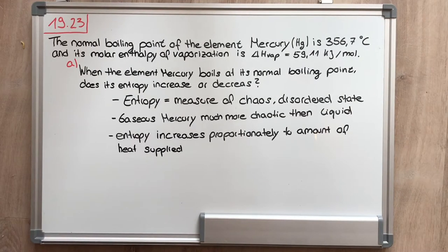For the first question, we have to figure out what is entropy. Entropy is a measure of the chaos, a disordered state. Gaseous mercury is much more chaotic than liquid mercury. Therefore, the entropy increases significantly during the transition to the gas phase. The entropy increases proportionately to the amount of heat supplied.